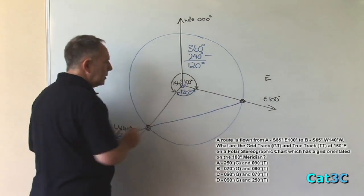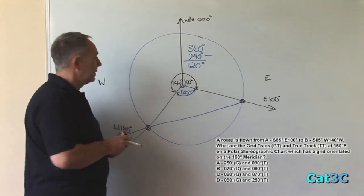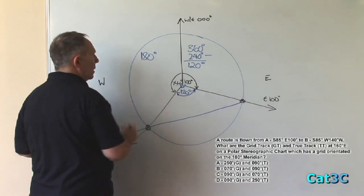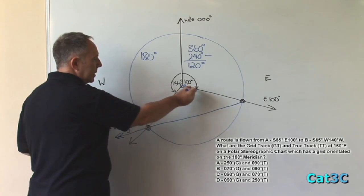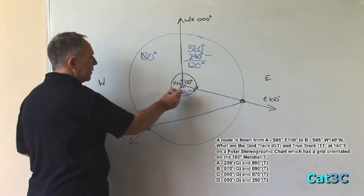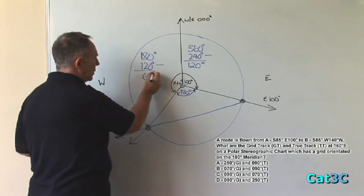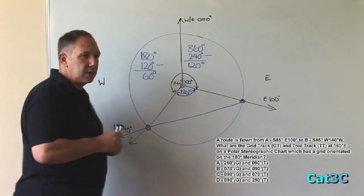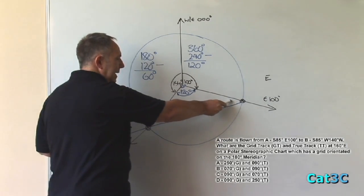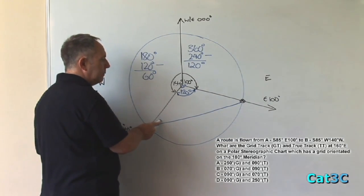Angles of a triangle add up to 180 degrees. Minus 120 degrees at the apex, or the top of the triangle, leaves us with 60 degrees. So that's 60 degrees that we have to share between the internal angle at A and the internal angle at B.